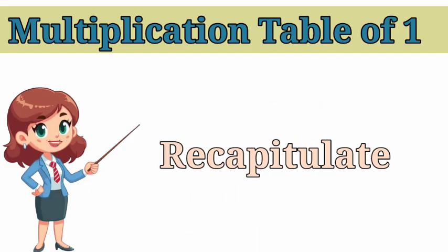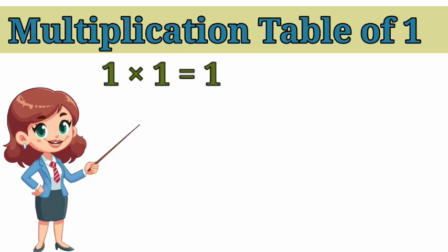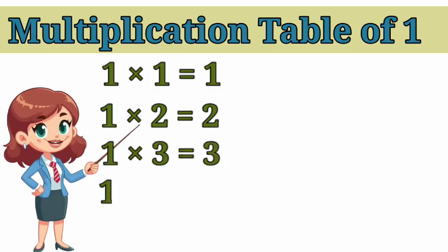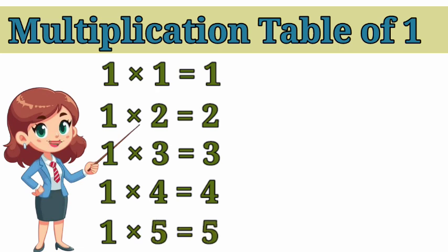Now let's recapitulate what we learned. One ones are one. One twos are two. One threes are three. One fours are four. One fives are five.